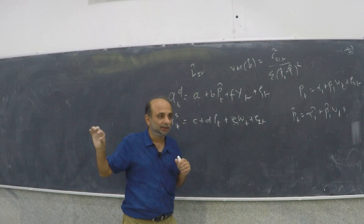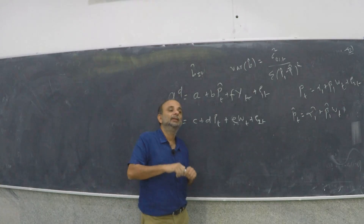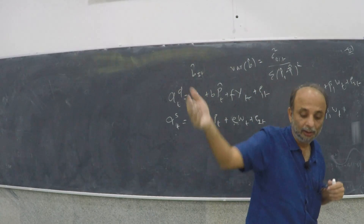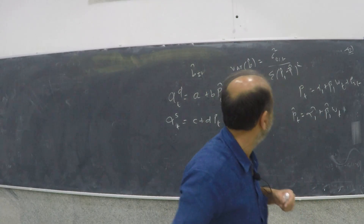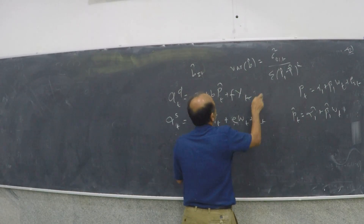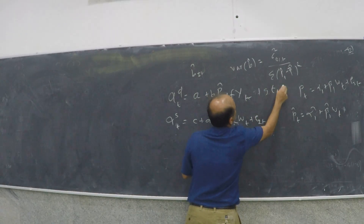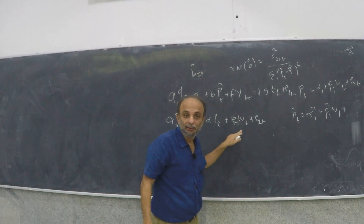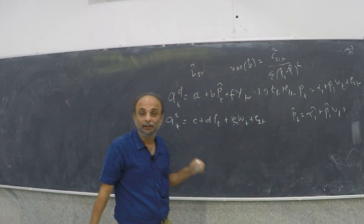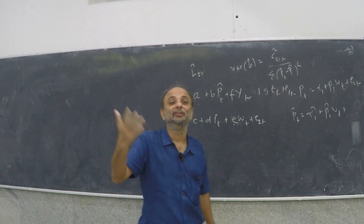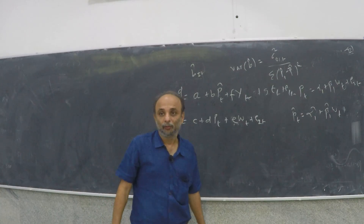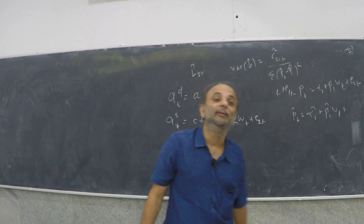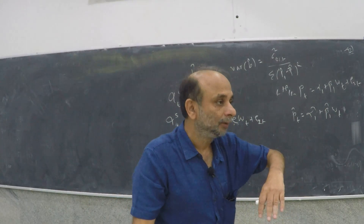In which case, the demand system is exactly identified if the number of excluded variables is exactly equal. If the number of such excluded variables is greater — for example, here I say income and F plus G plus E — then in principle you have two instruments to identify the supply curve, and the supply curve will be over-identified. Whereas if you have neither of these two, then the supply curve is under-identified.